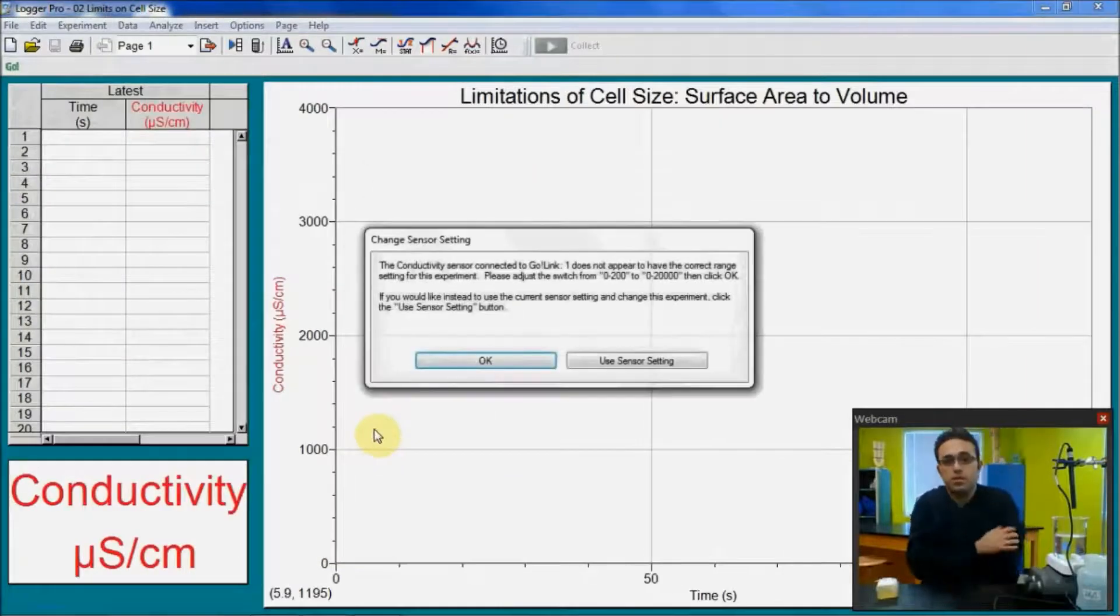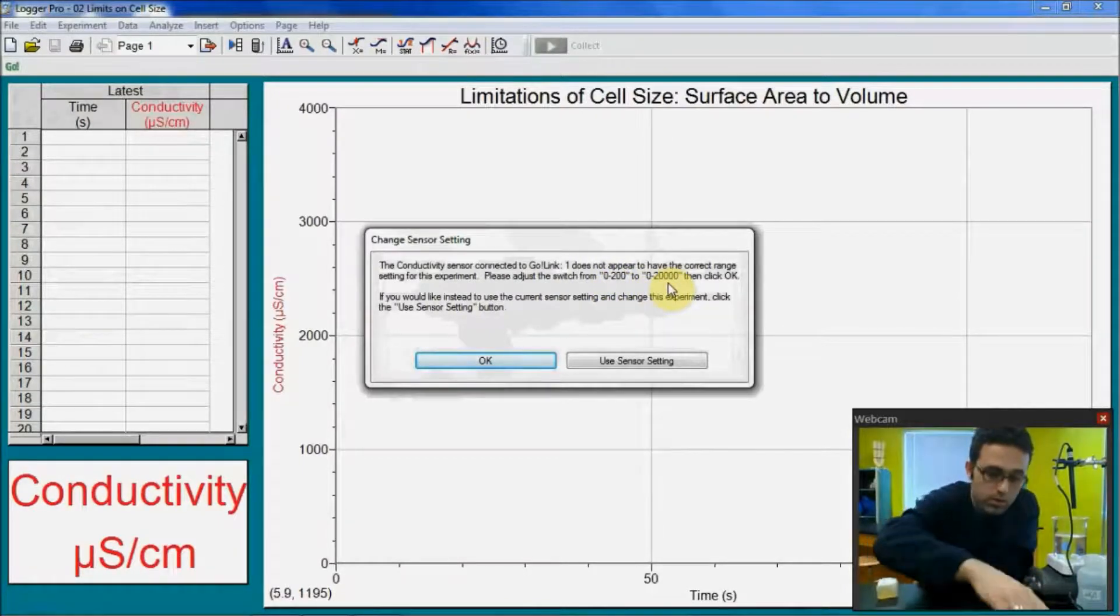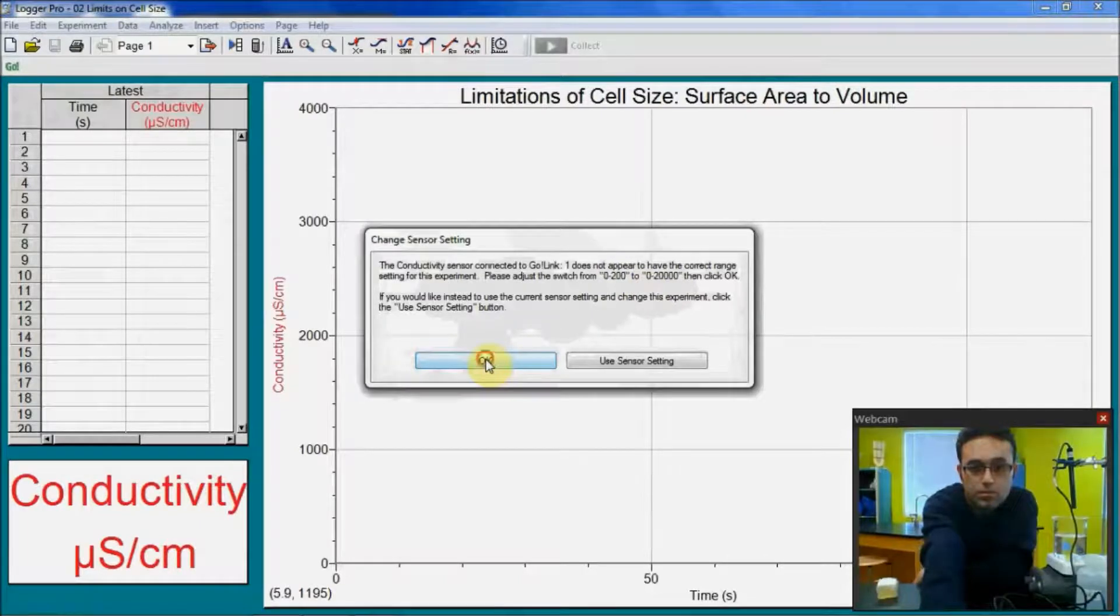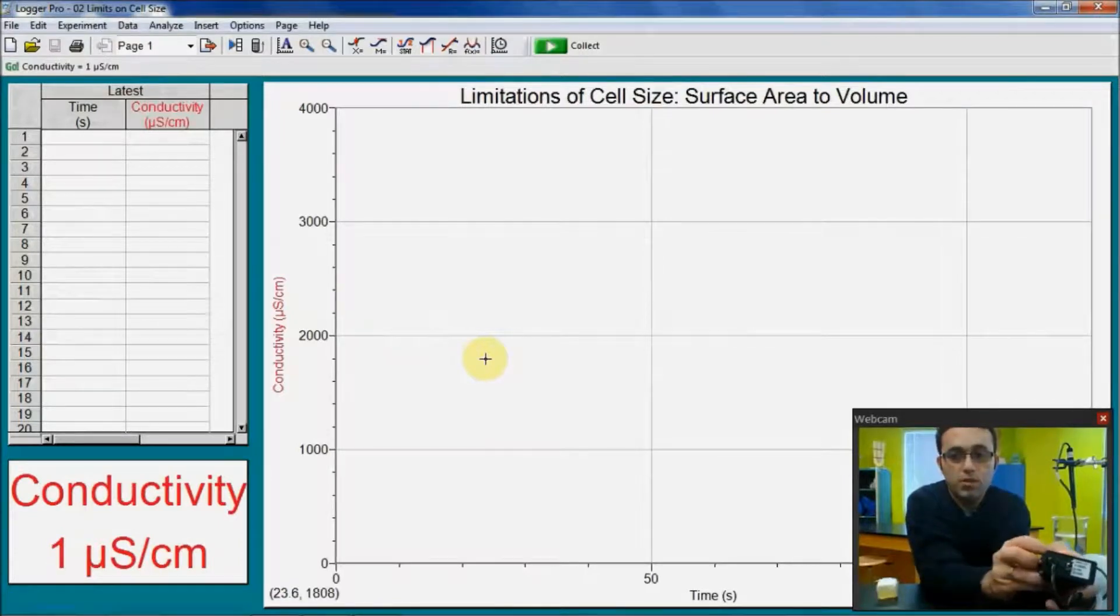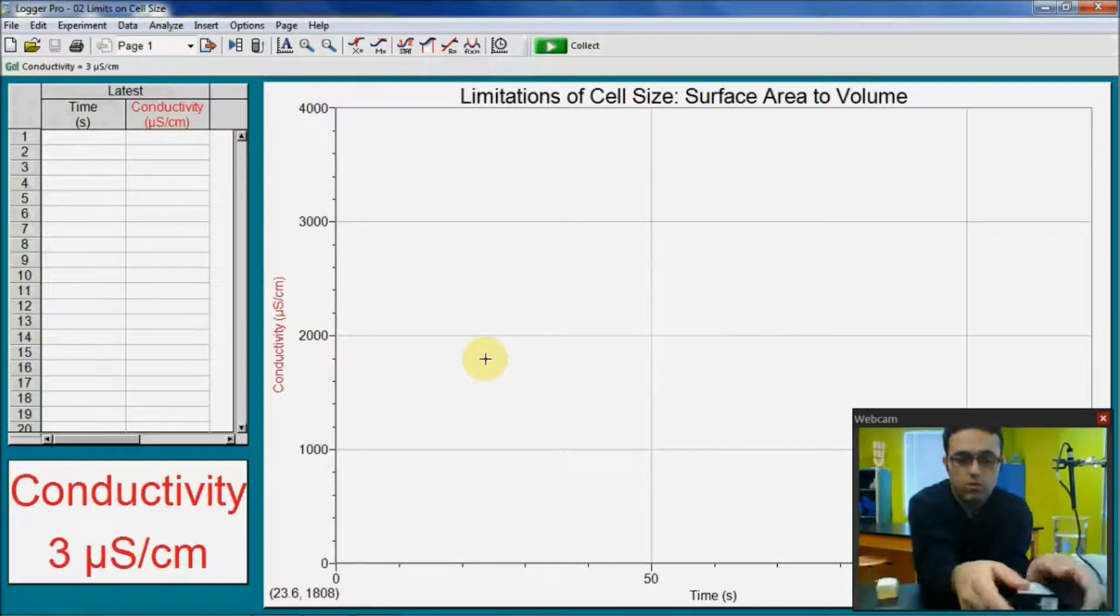Click open. It will open the preset file for you. And it is asking you, please adjust your conductivity sensor. Switch it from 0 to 200 to 0 to 20,000. And now I'll click okay. So there are three different choices of data collection on this, ranges for your data. It's 0 to 200, 0 to 2,000, and 0 to 20,000.